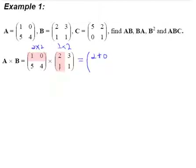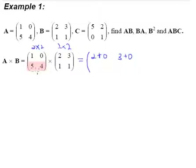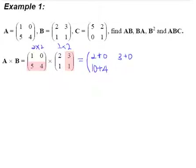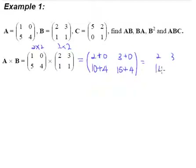Moving to the next column: 1 multiplied by 3 gives 3, and 0 multiplied by 1 gives 0. Then for the second row, first column: 5 multiplied by 2 gives 10, plus 4 multiplied by 1 gives 4. And for the next column: 5 multiplied by 3 gives 15, plus 4 multiplied by 1 gives 4. Working this out, we get 2, 3, 14, 19. Our answer is indeed a 2 by 2 matrix.